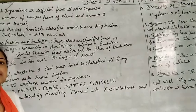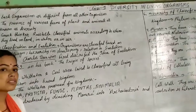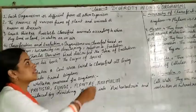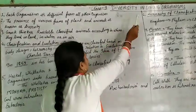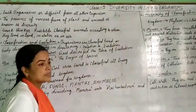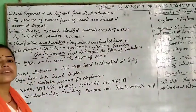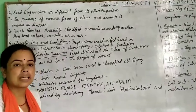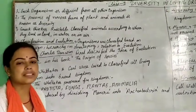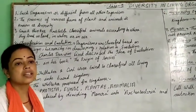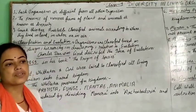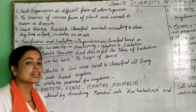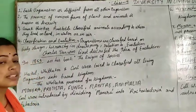I am a biology teacher and this is the chapter of Class 9 diversity in living organisms. Different types of animals and plants exist, and their living styles are different — their eating, feeding, and locomotion types are also different. This is called diversity.